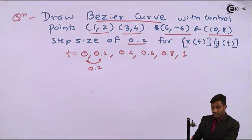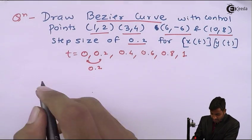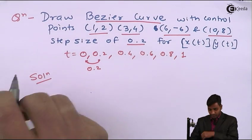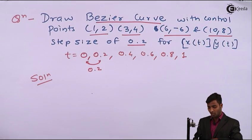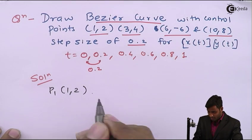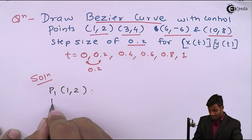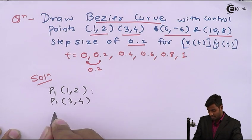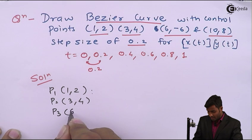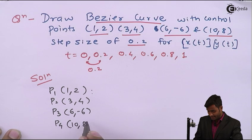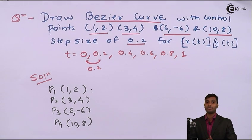Let's start with the solution. We have 4 control points: P1 with coordinate (1,2), P2 with coordinate (3,4), P3 with coordinate (6,-6), and P4 with coordinate (10,8). These 4 control points have been given.